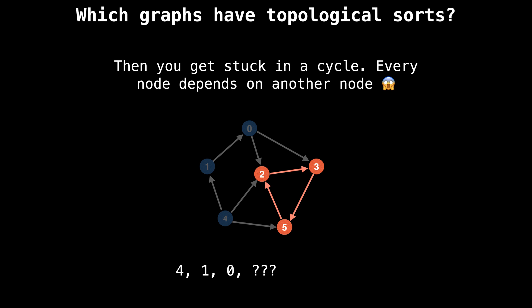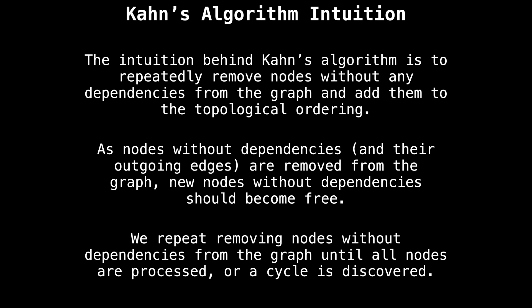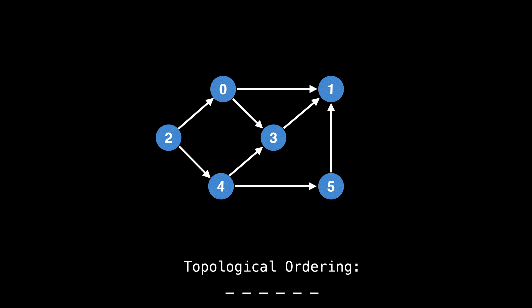As we will see, Kahn's algorithm is able to detect whether the graph we're trying to find the topological sort of contains a cycle or not. Let's start talking about Kahn's algorithm. The intuition behind Kahn's algorithm is very simple: it is to repeatedly remove nodes without dependencies from the graph and add them to the topological ordering. As nodes without dependencies and their outgoing edges are removed from the graph, new nodes without dependencies become free.